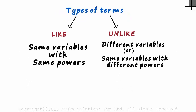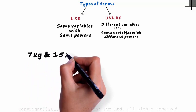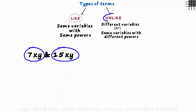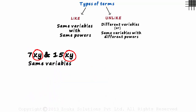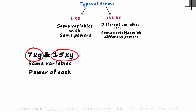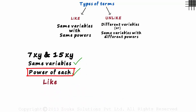Let's understand with examples. Consider two terms: 7xy and 15xy. Are these two terms like or unlike? To know the type, we just have to look at the variables and not the constants. Both these terms have the same variables x and y. The powers of x are the same in each term — it's 1. And the powers of y in each term is also 1. As both these conditions are satisfied, we can say that they are like terms — same variables and same powers of each variable.